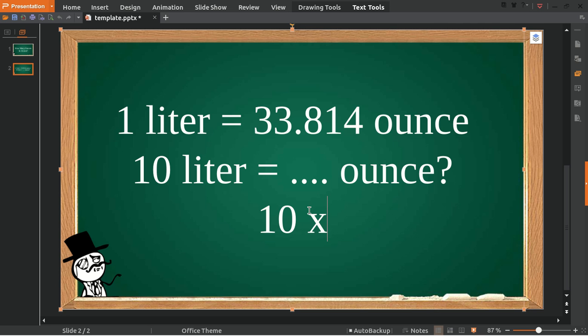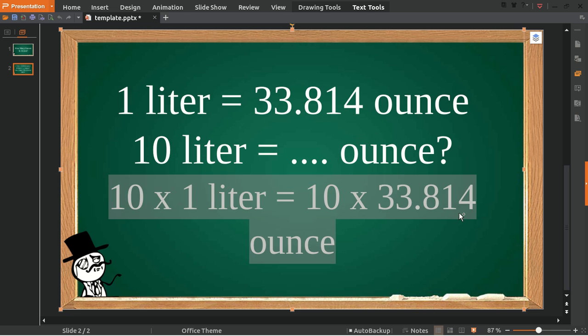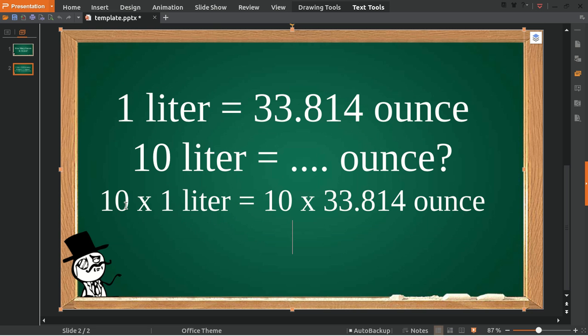To answer that question, first you need to type 10, and then we'll multiply 10 with 1 liter, because 10 multiplied by 1 liter equals 10 liters. Then we multiply it with 33.814. This is the basic formula of conversion between liters and ounces.